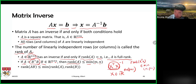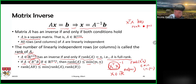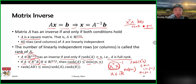For X-transpose X to have an inverse, it must have rank p-plus-one, because X-transpose X is (p+1) by (p+1). For this matrix to have an inverse, it must have rank p-plus-one. If n is less than p-plus-one, then this matrix cannot have rank p-plus-one — it will have rank n, which is less than p-plus-one, and there is no inverse.